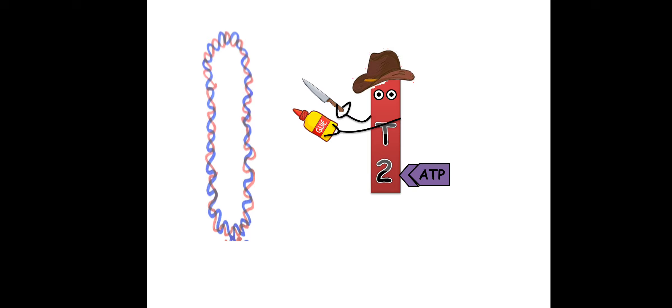In bacteria like E. coli, topoisomerases work normally. Bacteria have clever enzymes like gyrases and topoisomerases. Some gyrases keep working even when the bacteria is not replicating — untwisting the DNA, producing a cut, twisting and resealing it back. This is because whenever replication of DNA is required, the DNA is already loose and therefore replication can proceed faster.